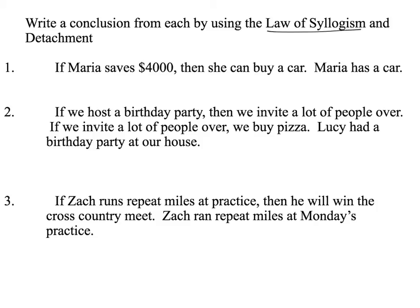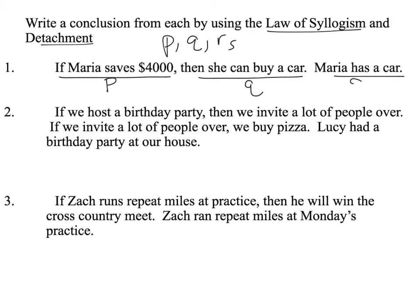Next, we use the law of syllogism and detachment to make a conclusion. Label your P's, Q's, and R's. If Maria saves $4,000 (P), then she can buy a car (Q). Maria has a car — we have P implies Q is true and Q is true, but we can't conclude anything because the law of detachment requires P implies Q and P is true, not Q is true.